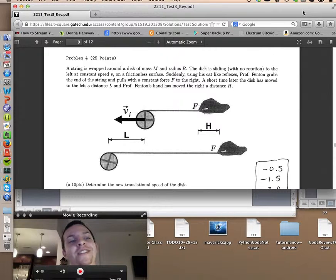So to get started, let's go ahead and read the problem out loud. A string is wrapped around a disk of mass m and radius r. The disk is sliding with no rotation to the left at constant speed vi on a frictionless surface.